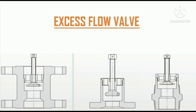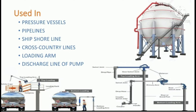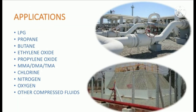Welcome to this video. We will see the excess flow valve, its construction type, and working principle. It is primarily used in pressure vessels, sphere-mounted bullets, pipelines, ship-shore lines, cross-country pipelines, loading arm discharge lines, and pump lines. We can see the picture of the sphere loading arm. Its applications include LPG, propane, butane, ethylene oxide, propylene oxide, MMA, DMA, TMA, chlorine, nitrogen, oxygen, and other compressed fluids.